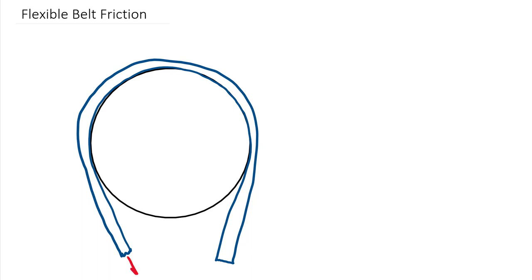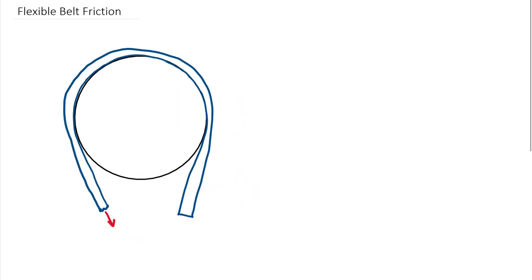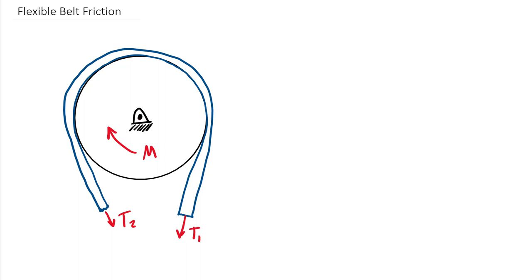The terms we focus on in a problem like this are going to be the tensions in the belt — that's a key component. We'll call this one T2 and then the tension over here T1. There are two different fundamental situations: either you'll be trying to rotate the belt around a non-moving pulley, or we will have a belt that wants to slip over a non-moving object.